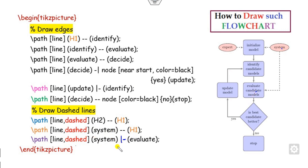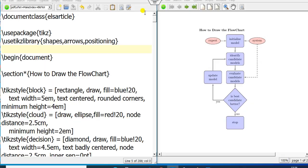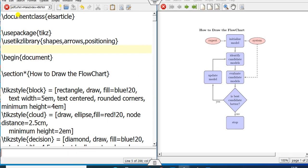Once you have written everything, the complete picture is done. You end the tikzpicture. Once you run this file, you will get this output. I can run this file for you — this is the output.